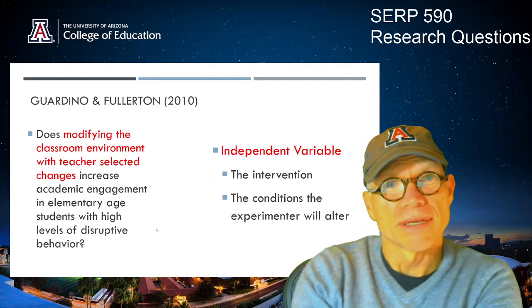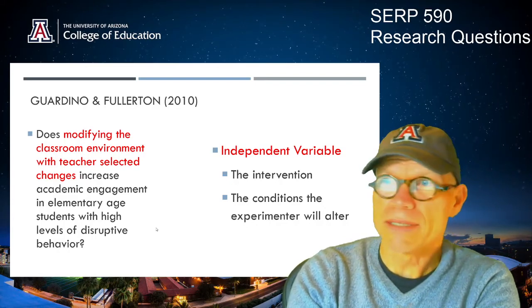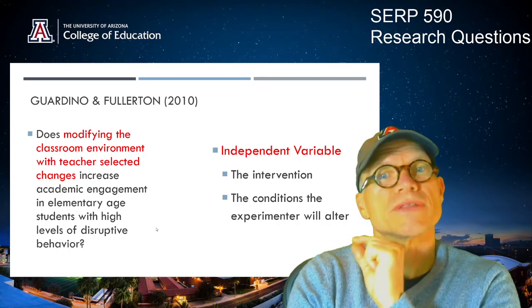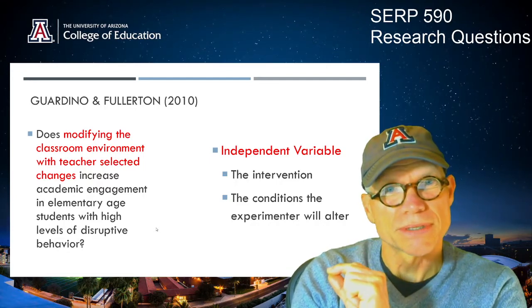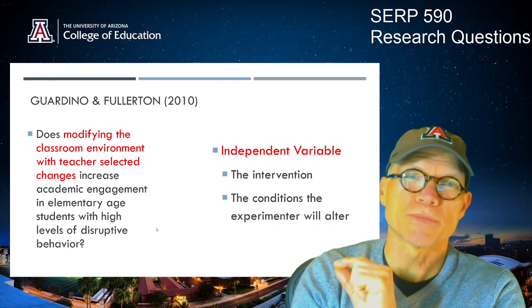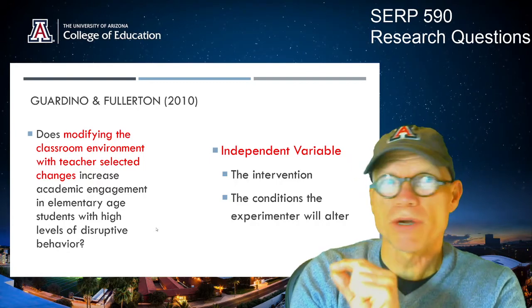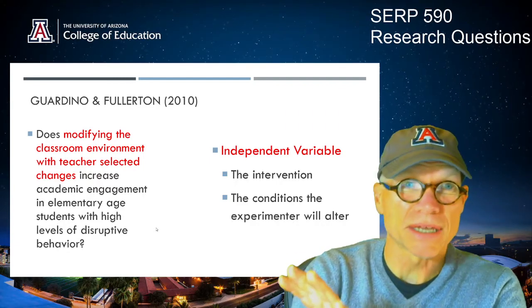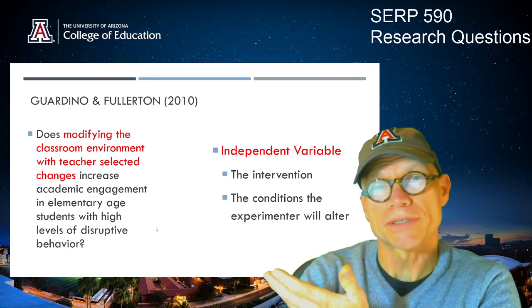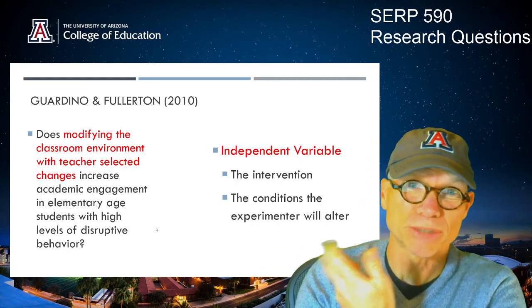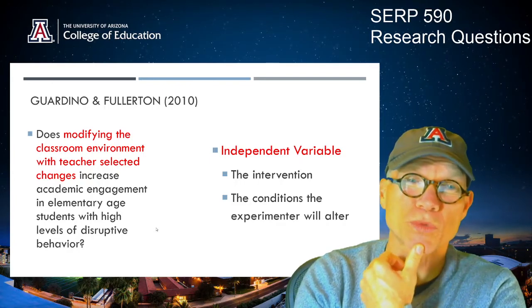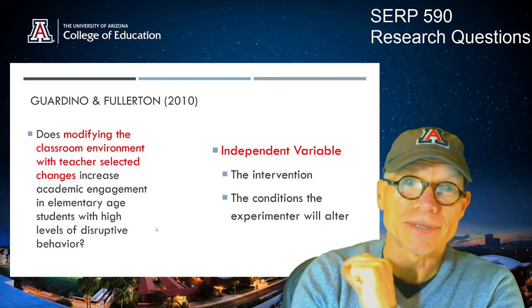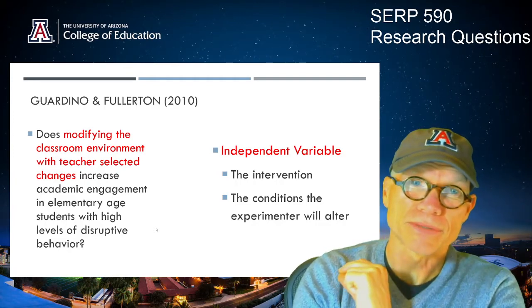First, there is the independent variable. In this case, it is modifying the classroom environment with teacher-selected changes. So the independent variable is the intervention — the conditions that the experimenter will alter during the experiment. Gardino and Fullerton were going to take the existing classroom environment and modify it using teacher-selected changes. You probably use interventions all the time in your work. Those can be the subject as an independent variable in a single case research question.